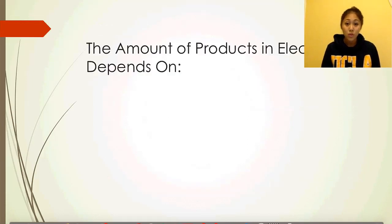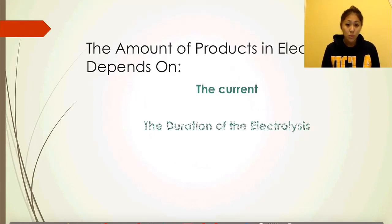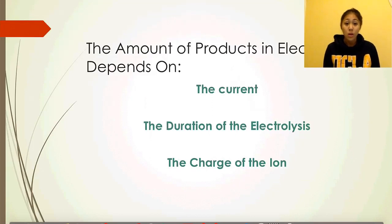From all of this, you should be able to see that the amount of products in electrolysis depends on the current, the duration of the electrolysis, and the charge of the ion. Remember, the first equation we worked with in this video was Q equals I times T, Q being the charge, I being the current, and T being the time. So current is I, duration is time, and the charge is Q.